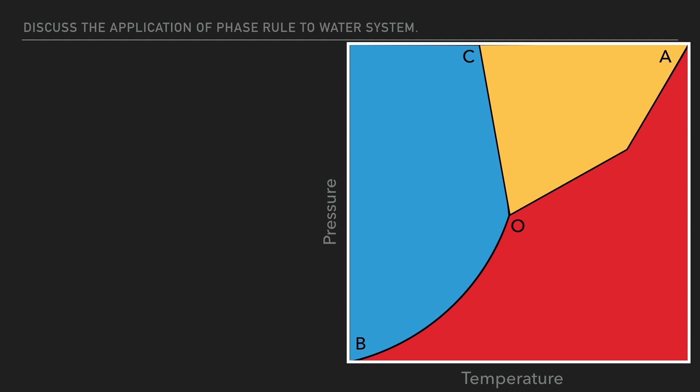The areas AOC, AOB and BOC represent liquid water, water vapor and ice solid phase respectively.